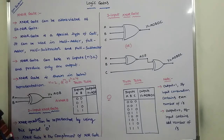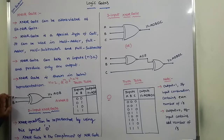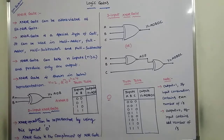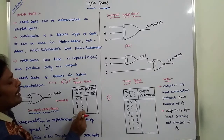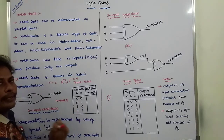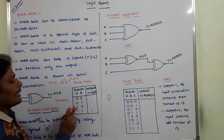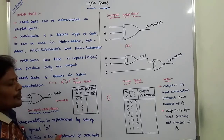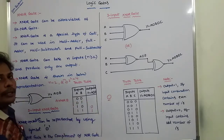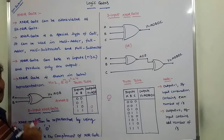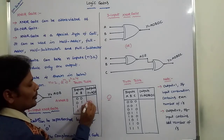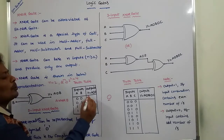In the A exclusive NOR B operation, if any input combination contains an even number of 1s, then the output is equal to 1; otherwise, the output is equal to 0. The combination 1,1 contains two 1s, which is even, so output is 1. The combinations 0,1 and 1,0 each contain a single 1, which is odd, so output is 0. When both inputs are 0, the output is equal to 1.